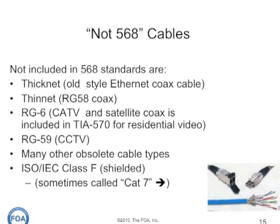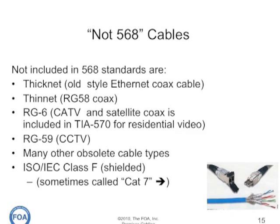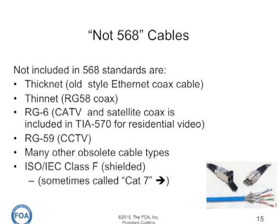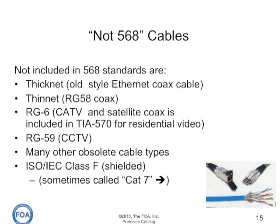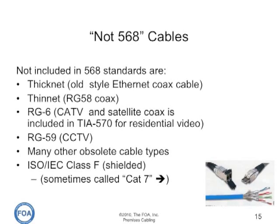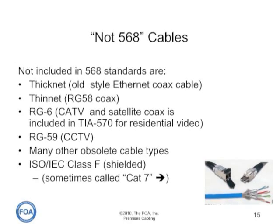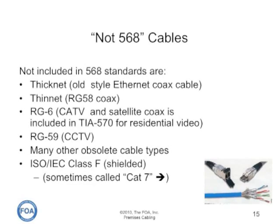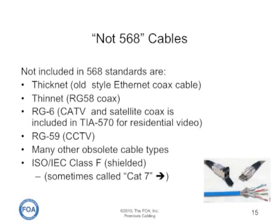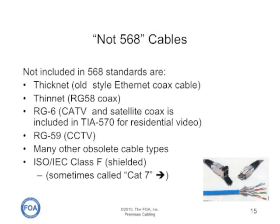Numerous cables used for networking and voice over the years are no longer included in 568 and ISO IEC 11801 international standards. Not included are any coax for thick net — the old Ethernet coax cable — or thin net, the smaller Ethernet cable. Also excluded are satellite or cable TV coax such as RG6, RG59 typically used for closed circuit television, and many other isolated cable types like IBM cabling. Also not currently included is the ISO IEC Class F shielded cable, sometimes called Category 7. As of this video, Category 7 is finally being considered by the TIA in the U.S. but is not yet a standard.